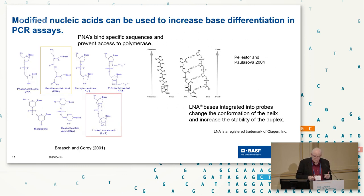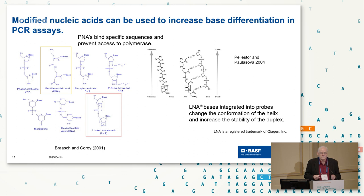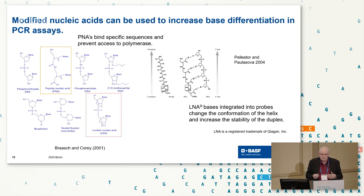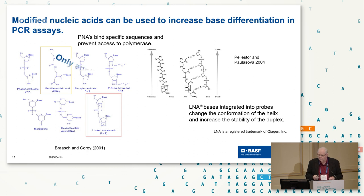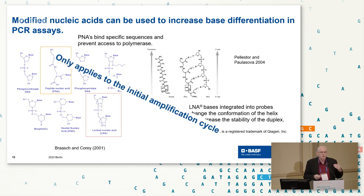You can use LNA-based or PNA-based techniques — peptide nucleic acids — to help differentiate and block amplification of either the wild type or the target sequence. These have been used and shown to work to some extent. However, it only applies to the initial PCR amplification; after that, you've got something that looks the same, so you still have a differentiation problem.